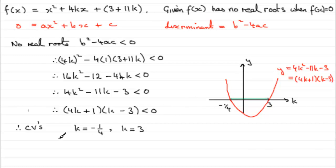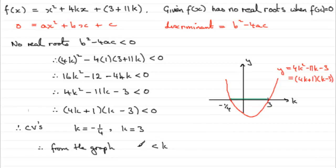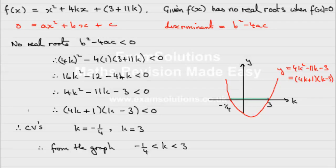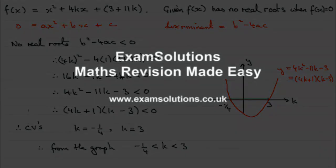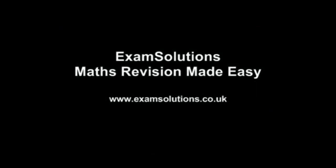Therefore, from the graph, we have that k must lie between minus a quarter and 3, strictly. I hope that's given you some idea of how you could do this part of the question. Thank you.